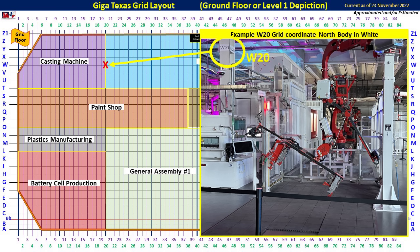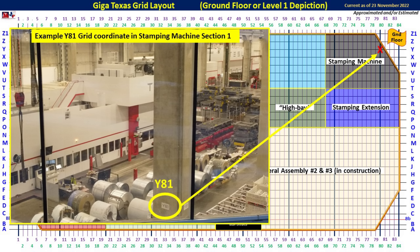Moving just a little bit south, you can see this part of the factory right at the delineation point between the casting machine and the body in white sections. This is listed as W-20, and you can see in the grid map where this is located. Here's a really good image inside the stamping machine structure on the southeast side showing two of the very large stamping machines and nearby rolls of steel and aluminum used to stamp out body parts. This is location Y-81 on a concrete column, also on the ground floor. The entire stamping machine structure is only one level, and they use concrete columns to support these very large and heavy bridge cranes.